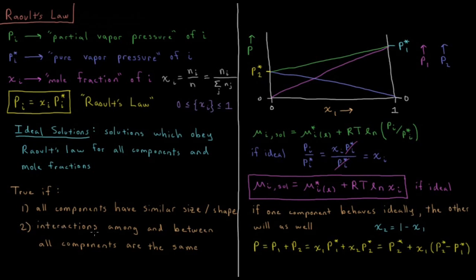Ideal behavior is also favored if the interactions among and between all components are the same. If the interactions between two molecules of substance A are very similar to the interactions between substance A and substance B, you're much more likely to have an ideal solution. Hexane and pentane interact very similarly with one another, whereas hexane and water interact very differently and are very unlikely to form an ideal solution.